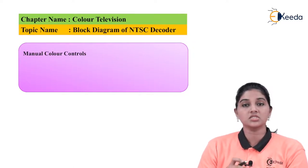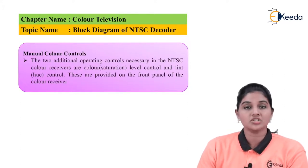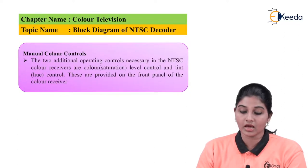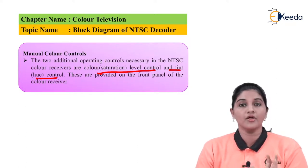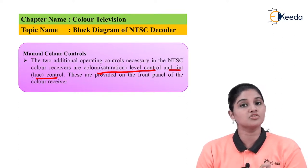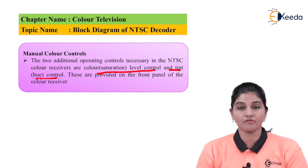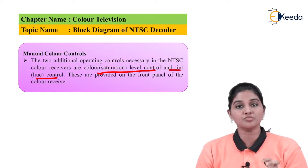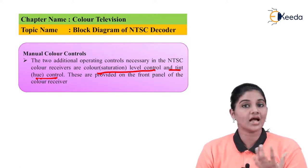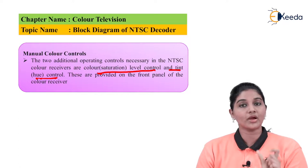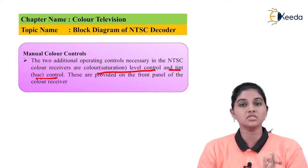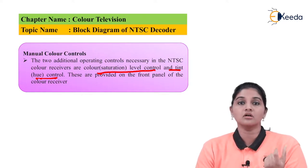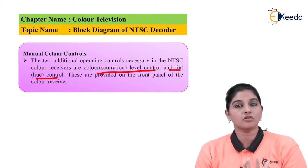The next circuit in the NTSC decoder is the manual color control. Two additional color controls are required in the NTSC color receiver: the saturation level control and the tint or hue control. The value of hue is different for different colors and is used for distinguishing between colors — for example, a red tomato has a red hue. Saturation indicates the purity of the color, meaning how much white is present in a particular color. For example, vivid green is a purely saturated color because it has no white component, whereas adding white to vivid green produces light green, meaning the color becomes unsaturated.